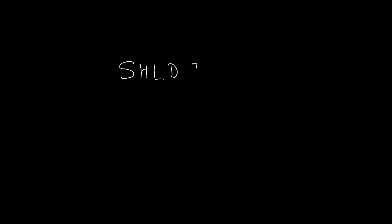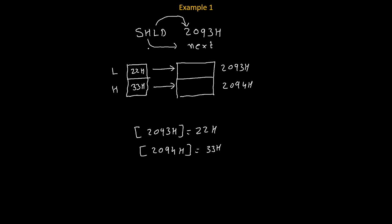Now let's talk about how many bytes this instruction uses. Consider SHLD 7525H. SHLD has its own opcode as the first byte, 75H is the second byte, and 25H is the third byte. So SHLD with a 16-bit address is a 3-byte instruction. A simple way to remember: if a 4-digit number is given in the instruction, it is a 3-byte instruction.